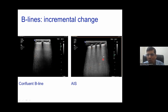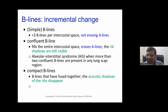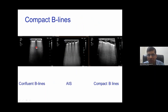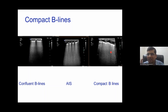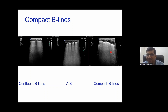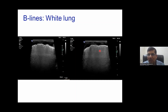When there are more than three confluent B-lines in one sector, that is AIS. The next pattern is compact B-lines. In AIS, rib shadows are still present, but in the compact pattern, rib shadows are also gone — indicating more fluid, more collapse, and less aeration. For practical purposes: simple B-lines with some A-lines and rib shadows still visible; AIS means more than three confluent B-lines; white out means the whole lung is white with air bronchogram visible below the pleural line.